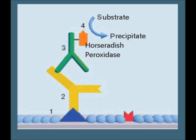Next the detection substrate will be exposed to the membrane. Horseradish peroxidase catalyzes the conversion of the substrate to a colored precipitate.